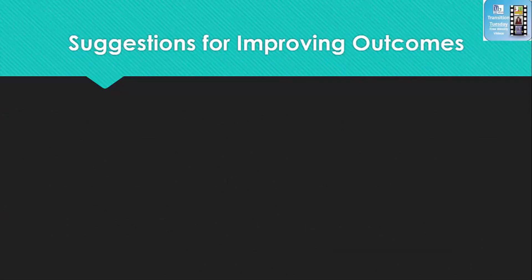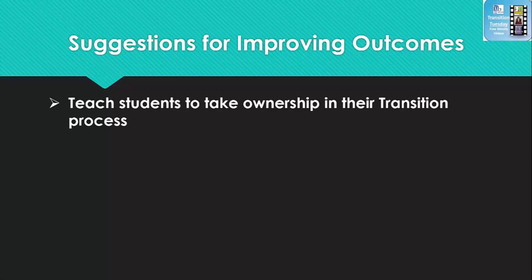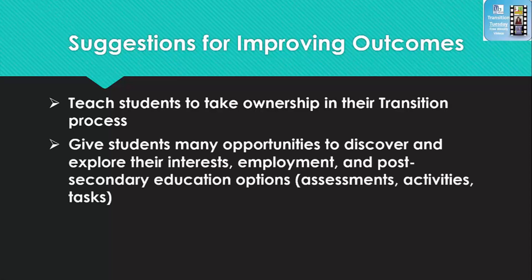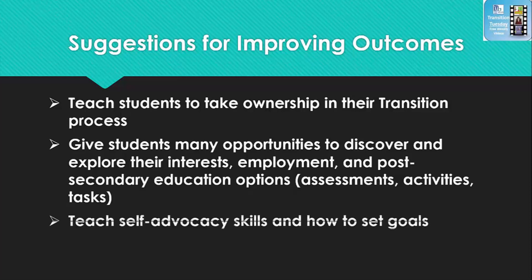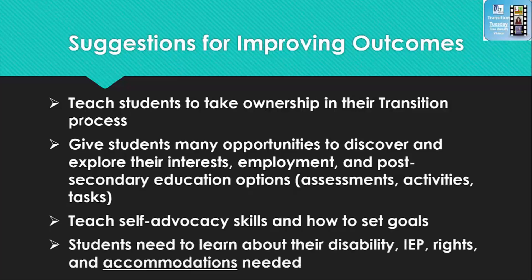Here are some suggestions for improving outcomes for students who are deaf or hard of hearing transitioning to adult life. First and foremost, teach students to take ownership in their transition process. Give students many opportunities to discover and explore their interests, employment, and post-secondary education options through assessments, activities, and tasks. Teach self-advocacy skills and how to set goals. Remember, students need to learn about their disability, IEP, rights, and especially the accommodations that they need for employment.